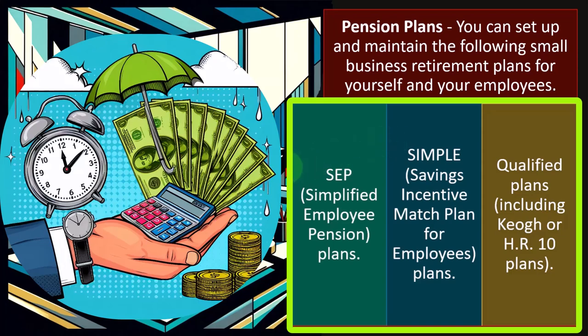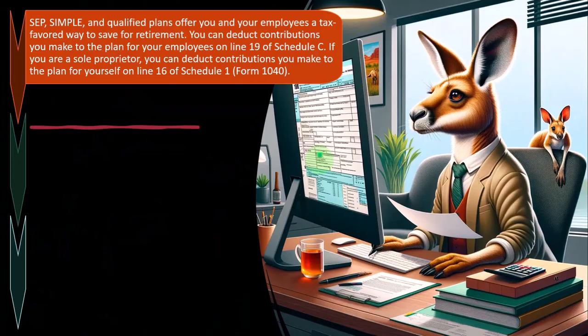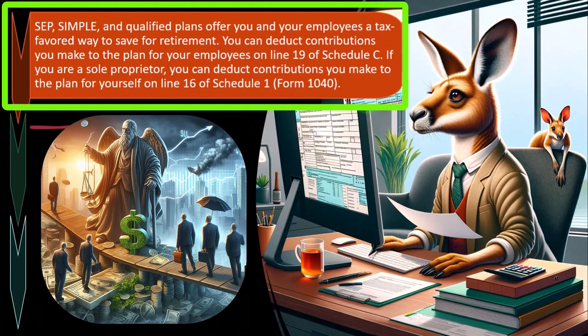That extended contribution window is a huge benefit for small businesses, because you don't really know how much you can put into a SEP until you figure out your income — since the contribution is limited by income. Setting up and funding a SEP or SIMPLE is fairly straightforward once established. The tax planning consideration is: when are we putting money in, and can we use this as a last-minute tax planning strategy?